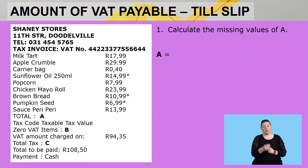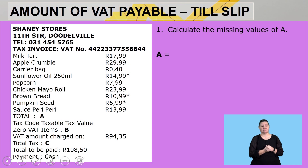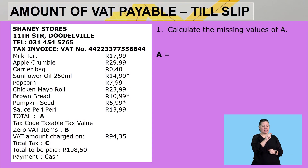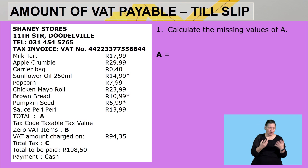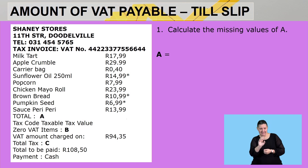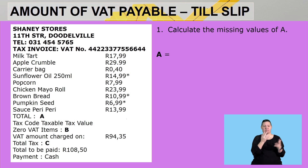Looking at the first example, we are given a till slip. Remember, every time you are given a financial document you need to first analyze it — check what you are given, from what you know up to what you do not know, as those will be your calculations. We can see it is a tax invoice with a VAT number, the items purchased and their prices, the total, the VAT, and the total amount to be paid. We will be calculating the missing values of A, B, and C.